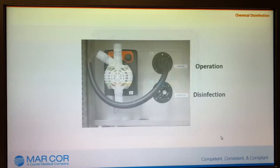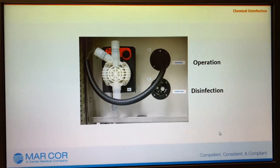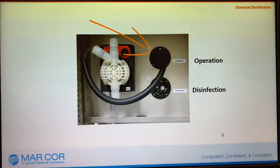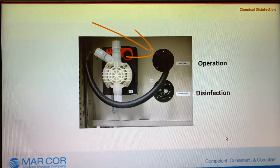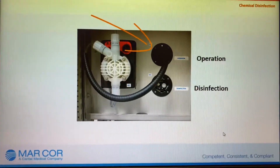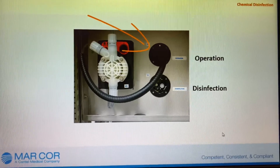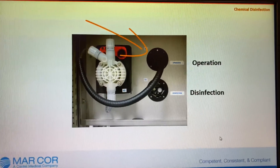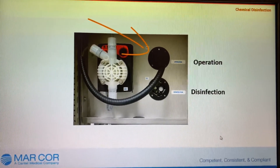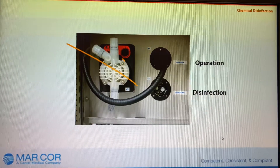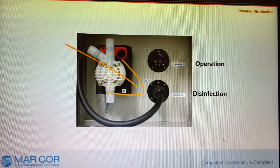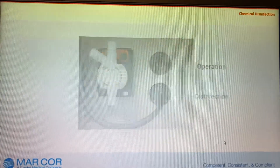When prompted, open the front door on the CWP and move the solution connector, also known as the dosing connector, to the disinfection position. Do this by twisting the connector counterclockwise and pulling the connector outward. Then insert the connector into the disinfection port and turn the connector clockwise to secure it in place.